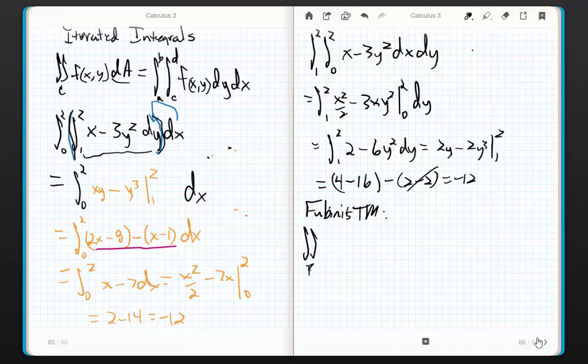It says the double integral over R of f(x,y) dA is equal to, I can do the integral from a to b of the integral from c to d of f(x,y). Now, careful here. This is going to be dy dx. a to b is x, c to d is y. And this is exactly equal to the integral from c to d of the integral from a to b of f(x,y). And this is going to be dx dy.